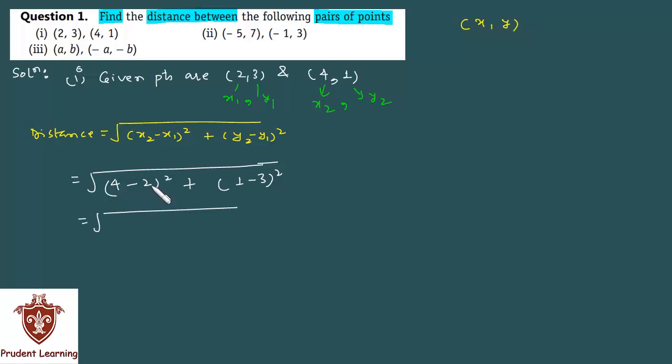Which gives us 4 minus 2 is 2, square of 2 gives you 4, plus 1 minus 3 is minus 2. And square of minus 2 also gives you 4.